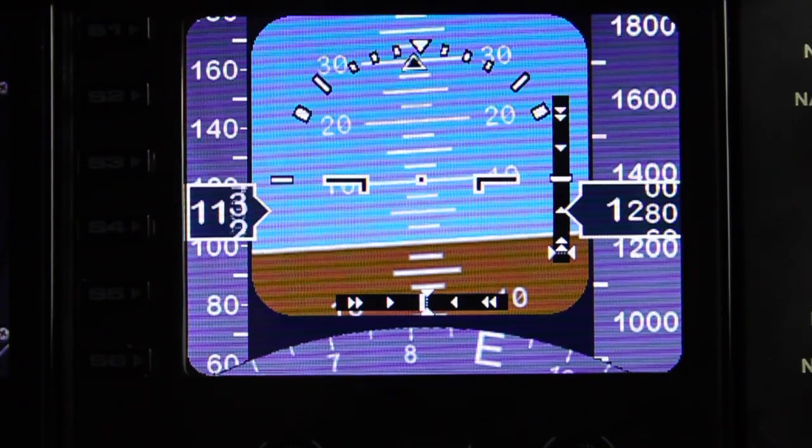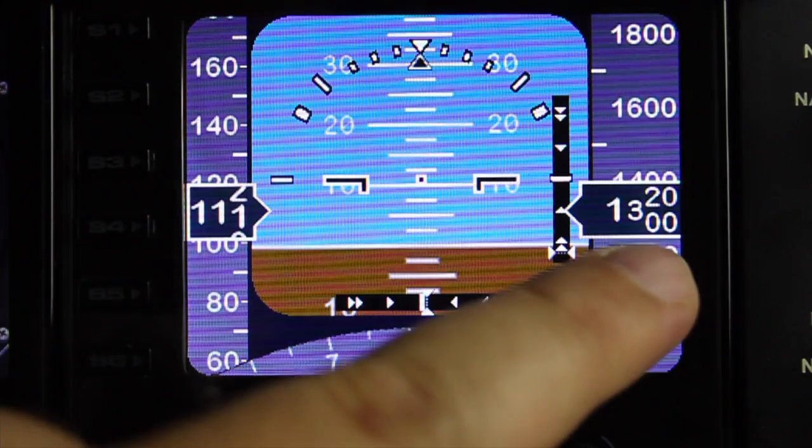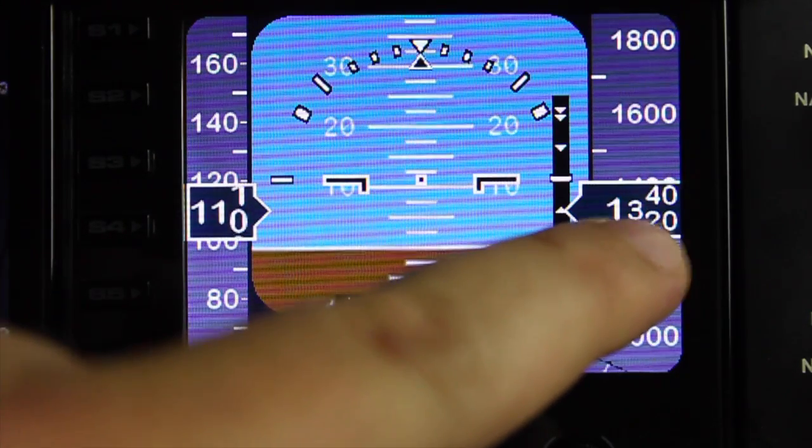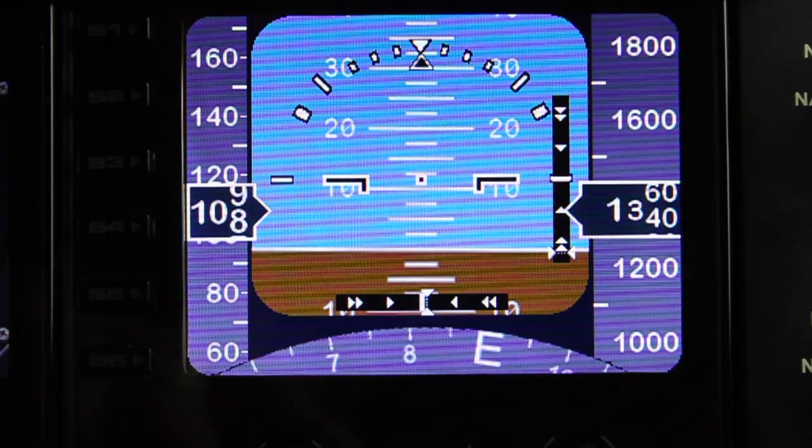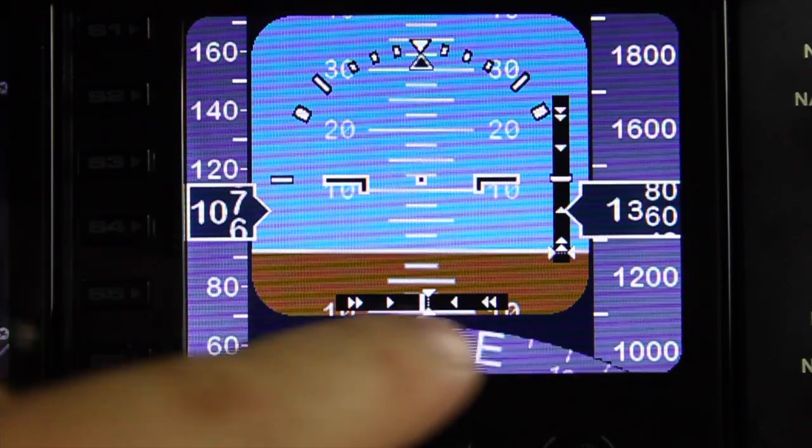Over on the right we have the altitude, and once again we have the zoom window which shows us the current altitude. We also have a compass display down at the bottom showing our current heading.